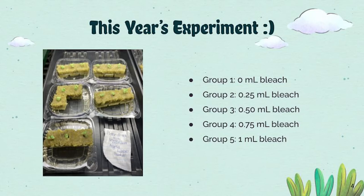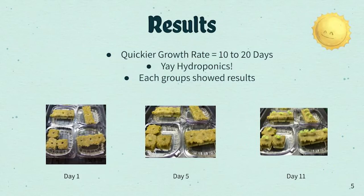Group one is my control group, which has zero amount of bleach in its solution, while groups two through five have different amounts of bleach and are my experimental groups. The results for this experiment were great, as I had quicker growth rates between 10 and 20 days. The hydroponics definitely helped because I was able to get data from every trial and each group did show results every trial.